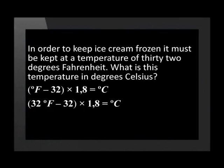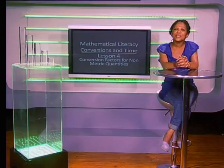This will give the value in degrees Celsius. Inside the bracket, 32 minus 32 gives an answer of 0, so the result is 0 degrees Celsius. This means that 32 degrees Fahrenheit is equal to 0 degrees Celsius. This answer makes sense because 0 degrees Celsius is the freezing point of water, the main component of ice cream.